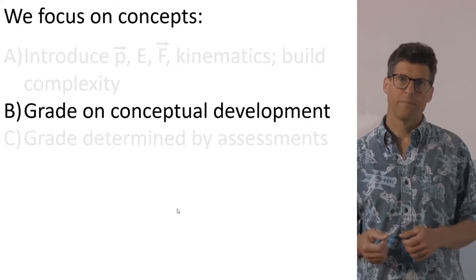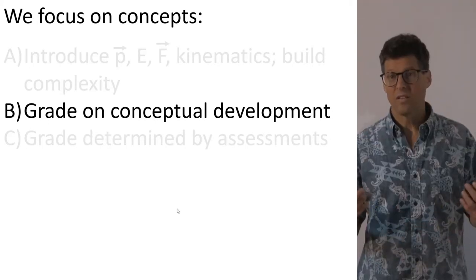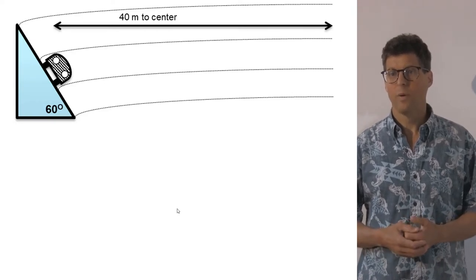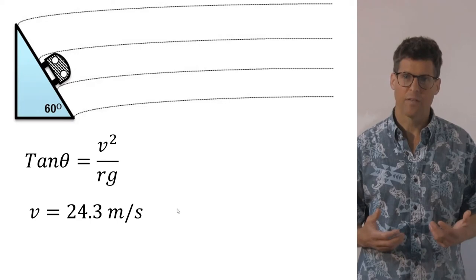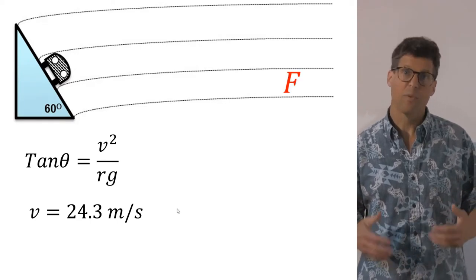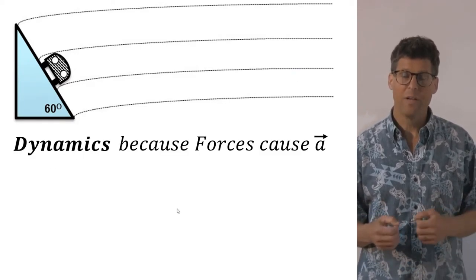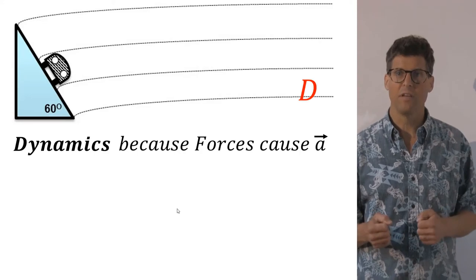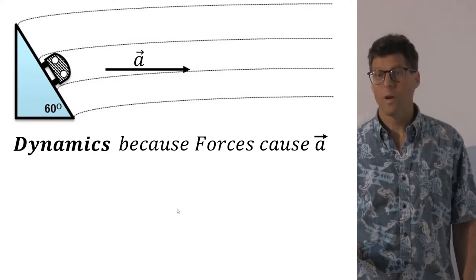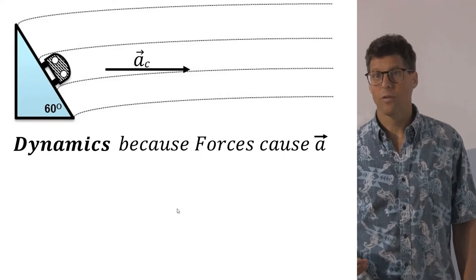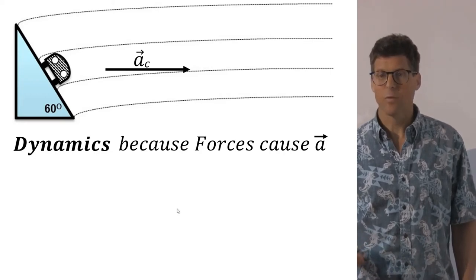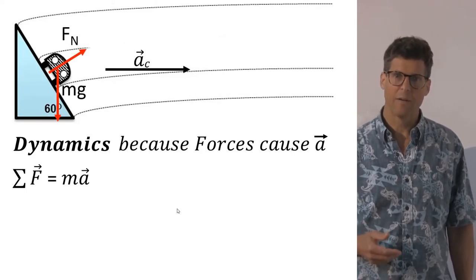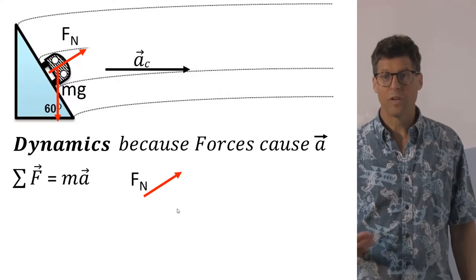So how do we grade our conceptual development? For instance, the example of a car coming around an off-ramp on a slippery road. A student may remember the formula, put the numbers in, and get the correct answer. For our assessments, this would earn them an F. However, if they first identify this is a dynamics problem because forces are causing acceleration, they would get a D. And if they recognize this acceleration was centripetal acceleration oriented inward, and this acceleration is a result of the sum of the forces, subsequently identifying the forces in a free body diagram, and adding them to get the resultant force, they would get a C because it's in the wrong direction.